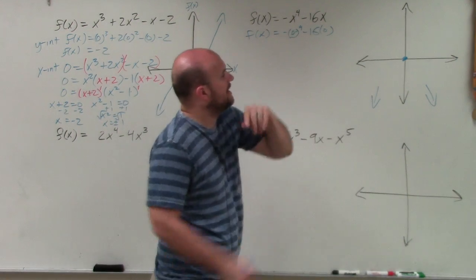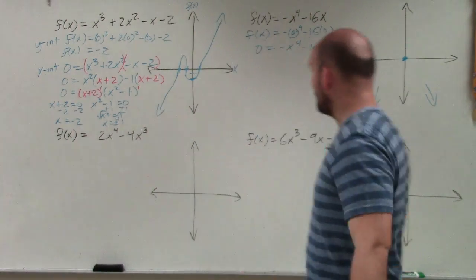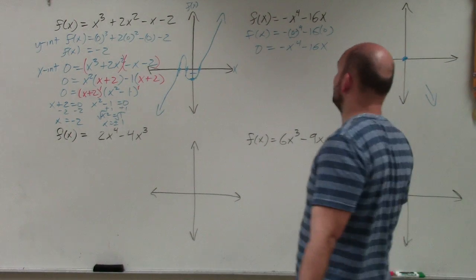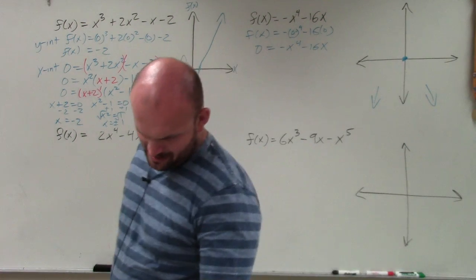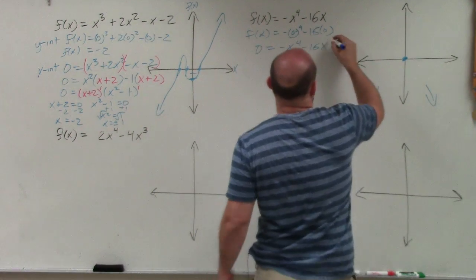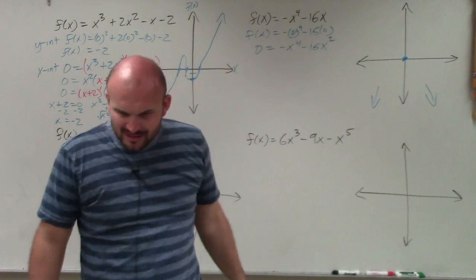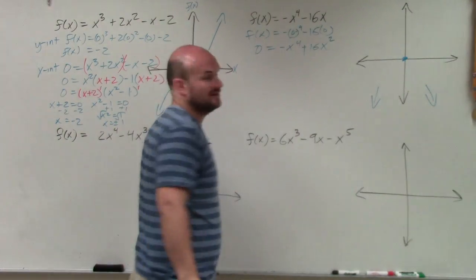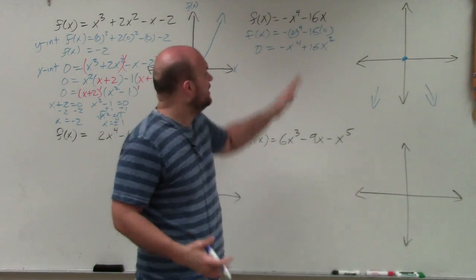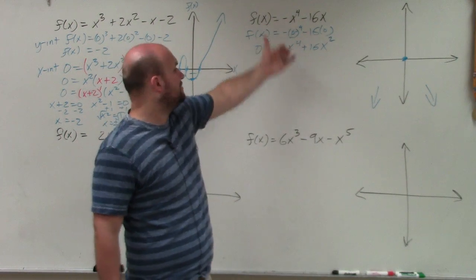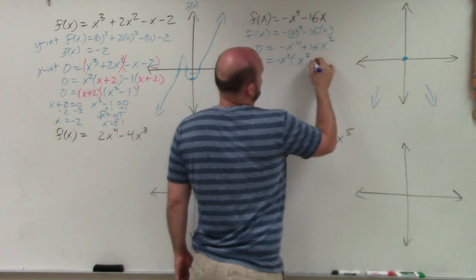The y-intercept is going to be 0. Now let's find the x-intercepts: 0 equals negative x⁴ plus 16x² — wait, let me correct that — it's negative x⁴ plus 16x². Factoring, both terms share a negative x², so I factor out a negative x², leaving me with x² minus 16. That's a difference of two squares.